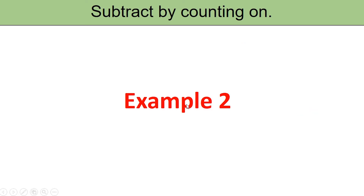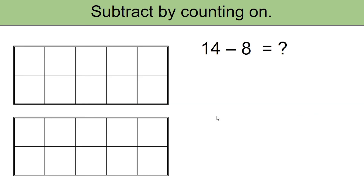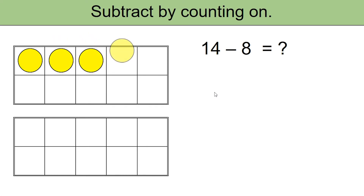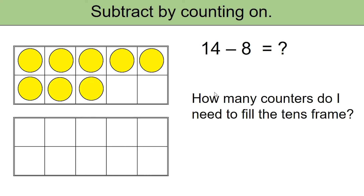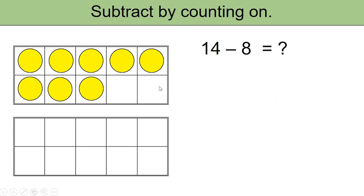Let's look at another example. Since we are using the approach of counting on, let's begin with 8 and set up 8 yellow counters in the first frame. Once again, think: how many counters do I need to fill the tens frame until I reach 14? Let's keep adding the red counters: 1, 2.